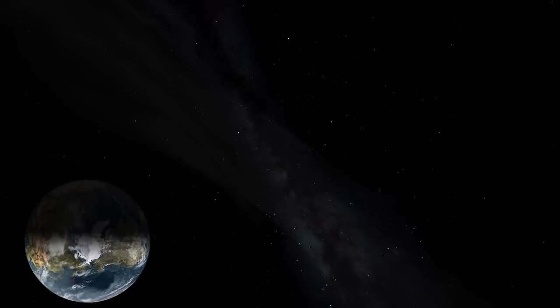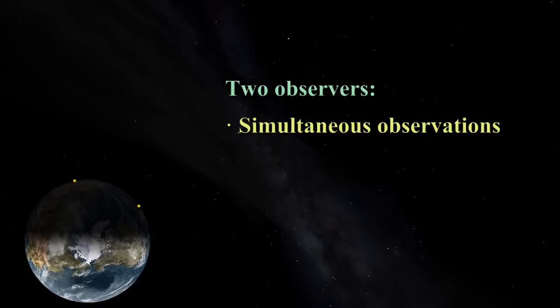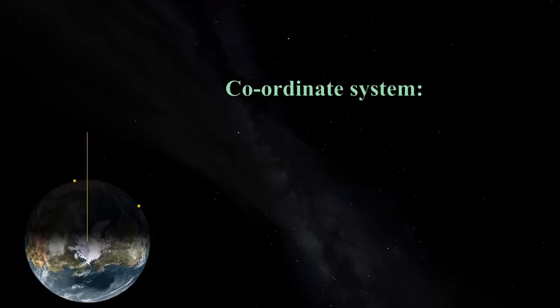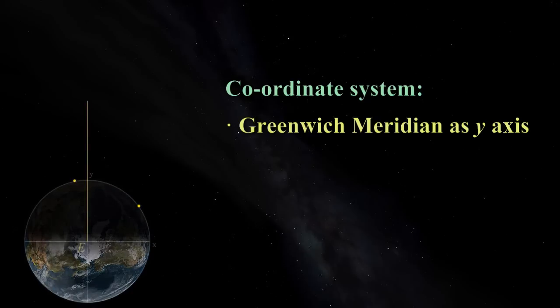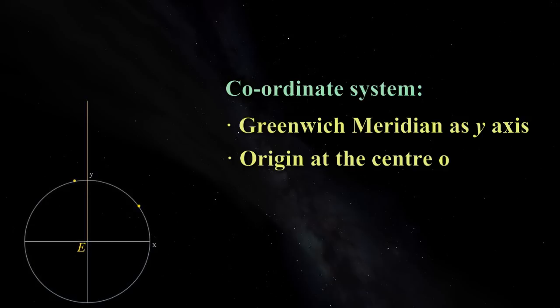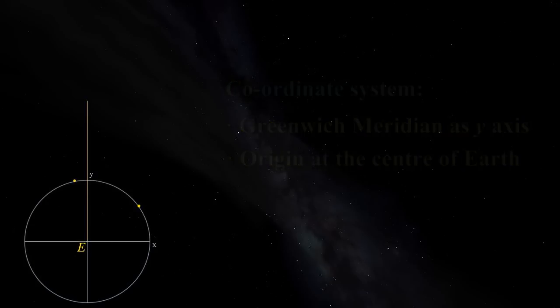Like Cassini, we'll measure Mars' position from two locations at the same time. We'll use points on the equator for no other reason than to simplify the mathematics and diagramming of this example. We'll need a coordinate system, so we'll use the Greenwich meridian as our y-axis, and set up a perpendicular x-axis, with the origin being the centre of Earth, labelled E.